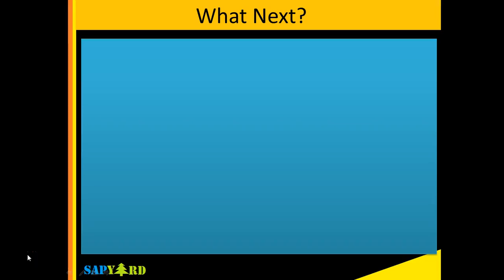What next for the participants? You would need to learn external debugging, which means if you want to debug from the portal screen, from WebDean Pro, or from some third-party application, you need to know how to debug using external debugging.